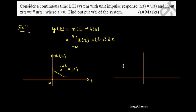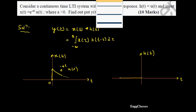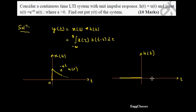Next, I need to sketch h(t) = u(t), which is the unit step signal. From minus infinity to 0 the signal is 0, and starting at 0 it takes amplitude 1 and remains as 1 till plus infinity. This is the unit step signal h(t).